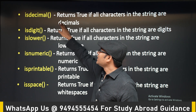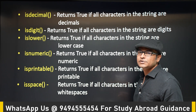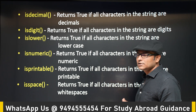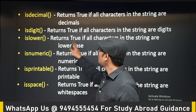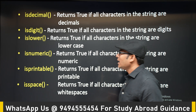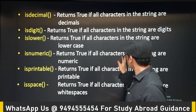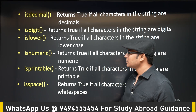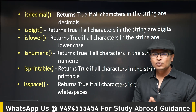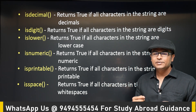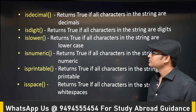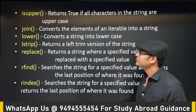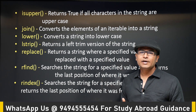isdecimal returns true if all characters in a string are decimal values. isdigit returns true if all characters are digits, otherwise false. islower returns true if all characters in the string are lowercase. isnumeric returns true if all characters are numbers. isprintable returns true if all characters are printable. isspace returns true if there are only spaces in the string. isupper returns true if all characters are uppercase.